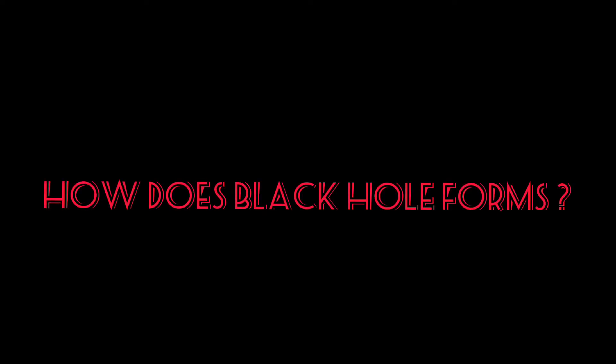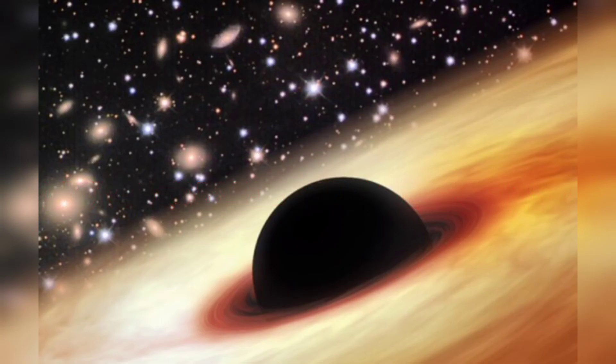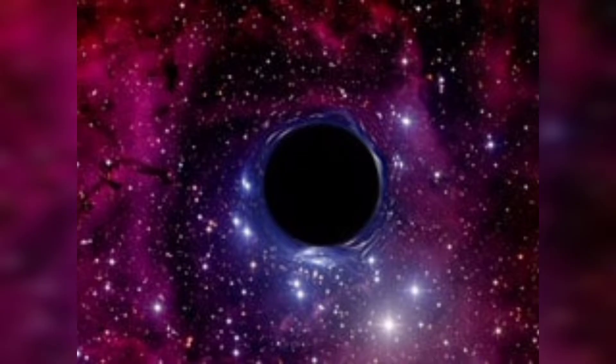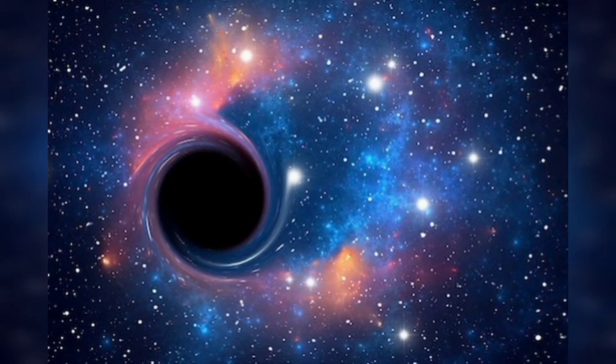How do black holes form? Scientists think the smallest black holes formed when the universe began. Stellar black holes are made when the center of a very big star falls in upon itself or collapses.